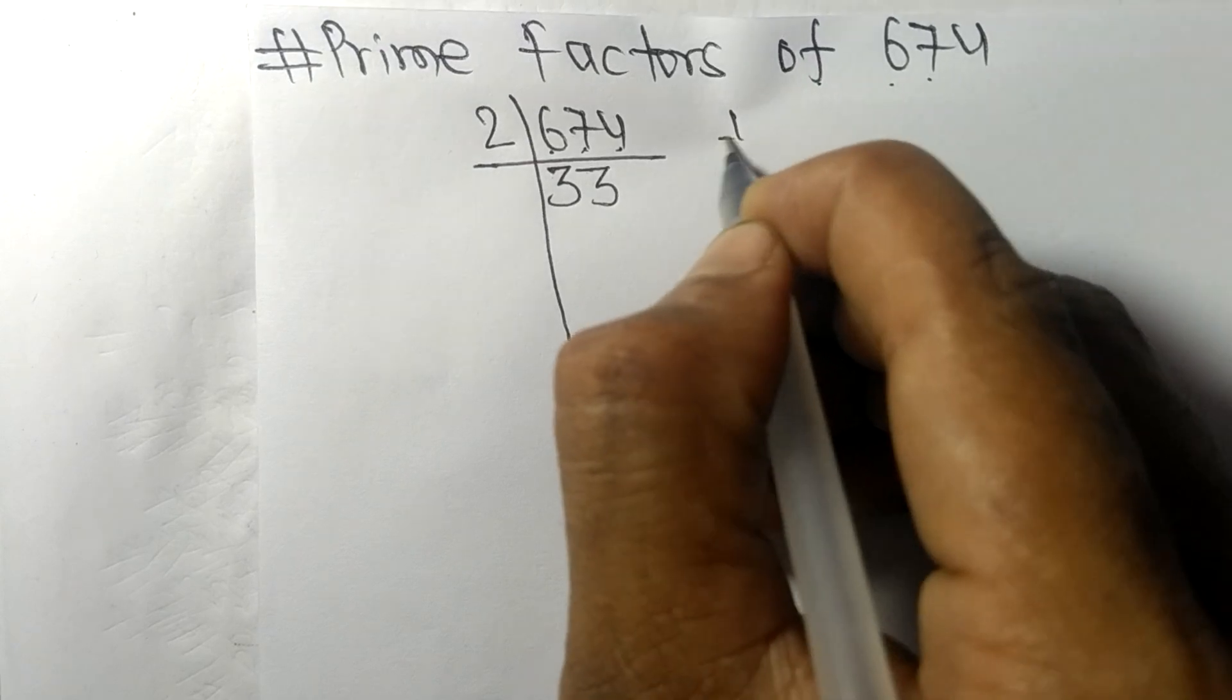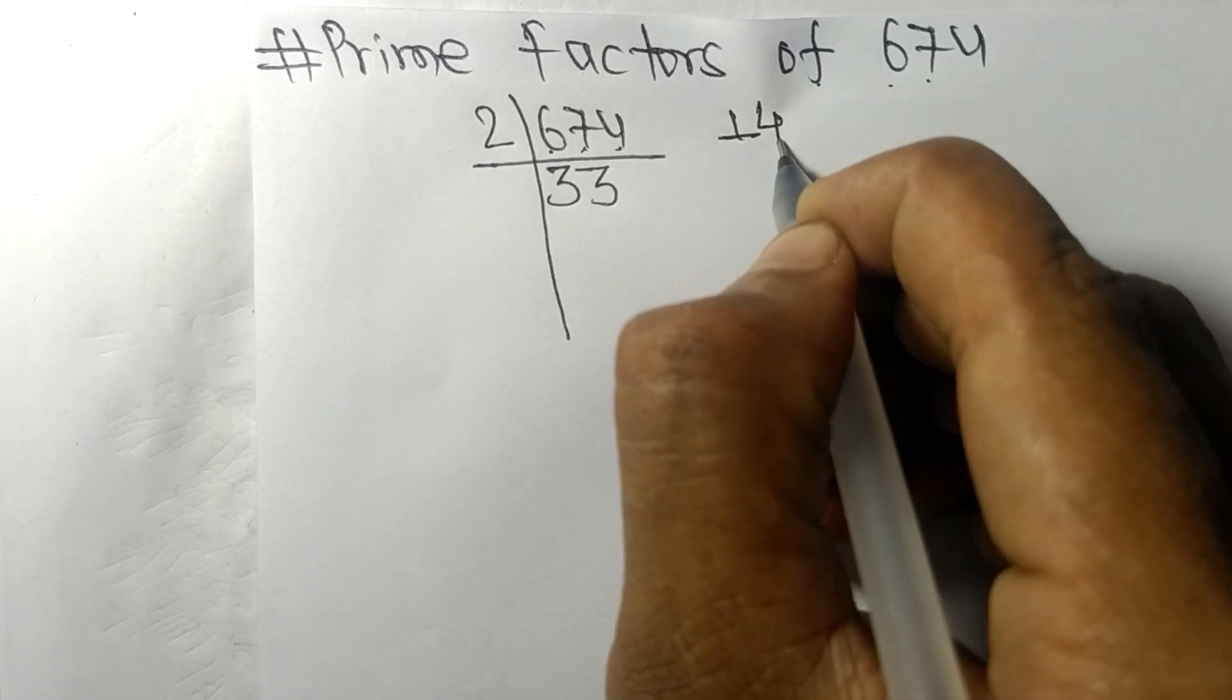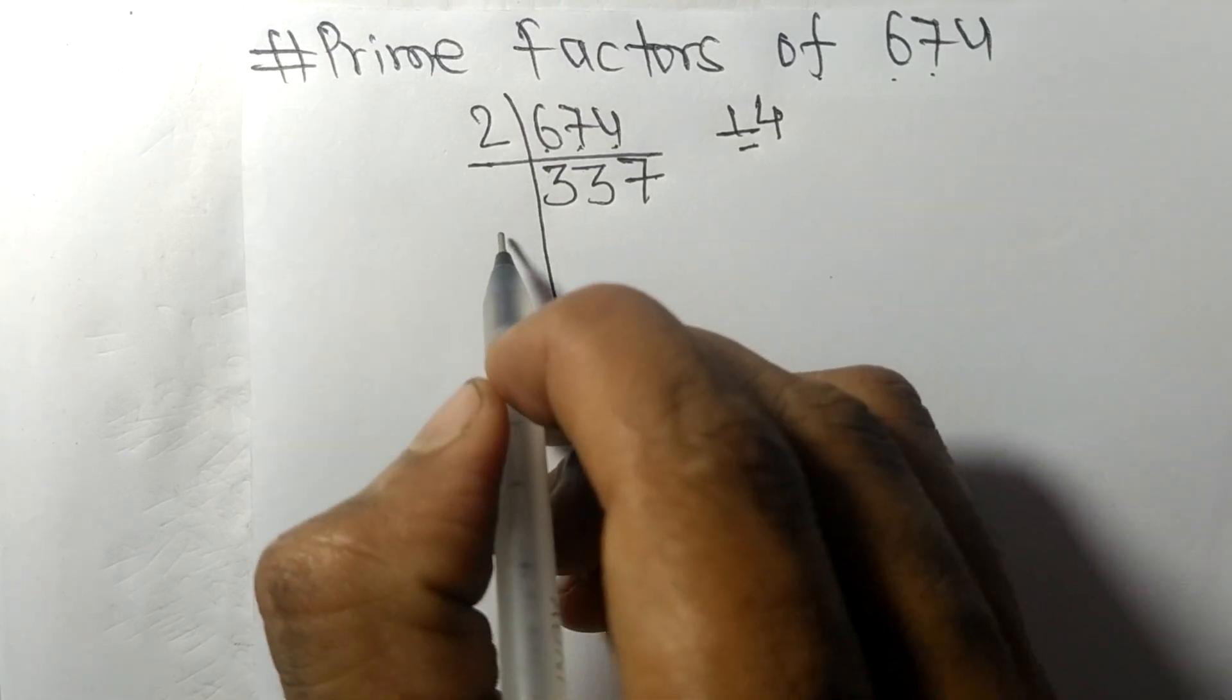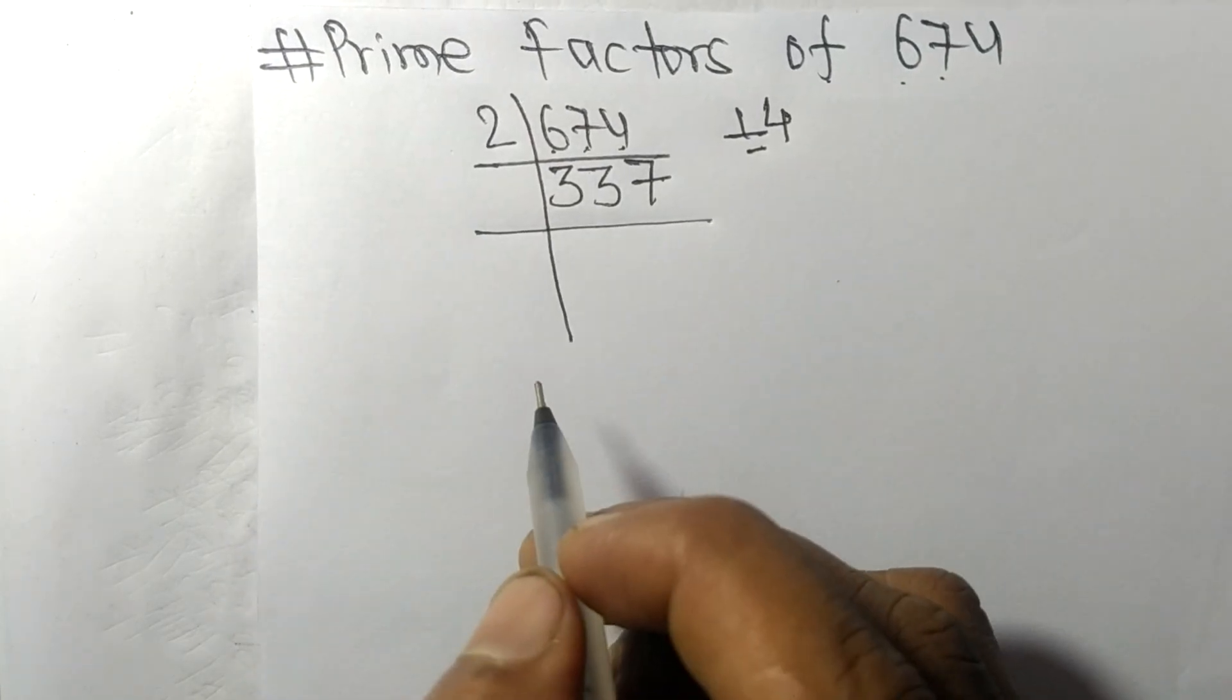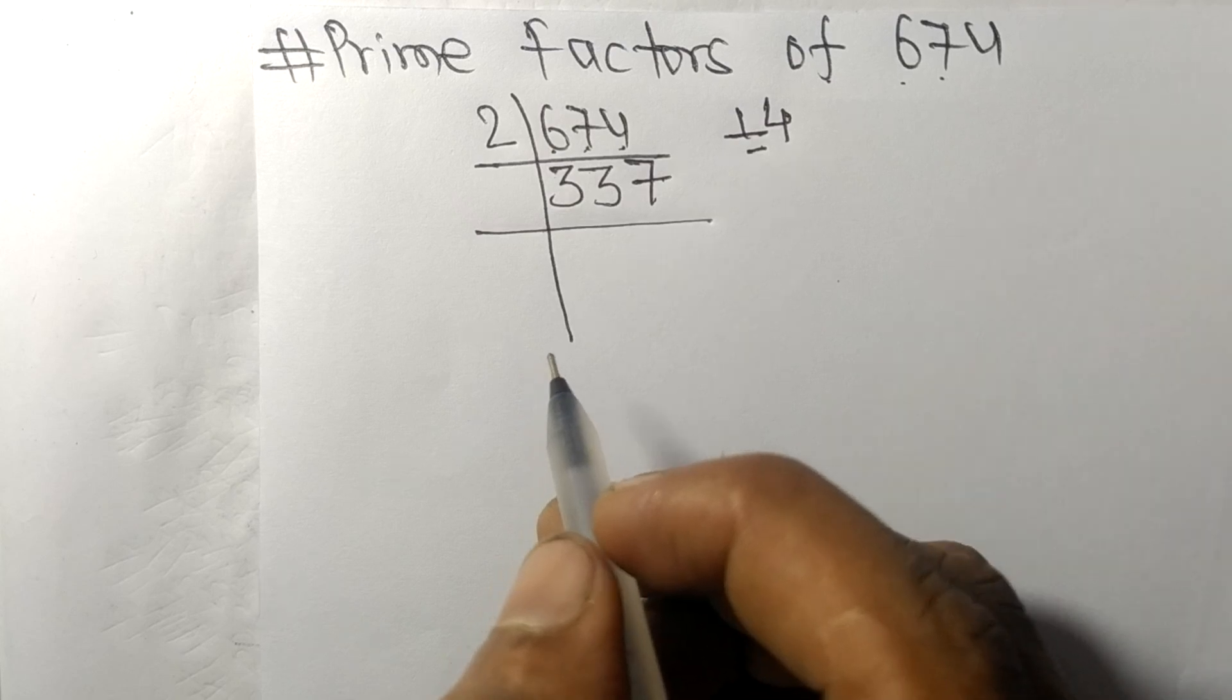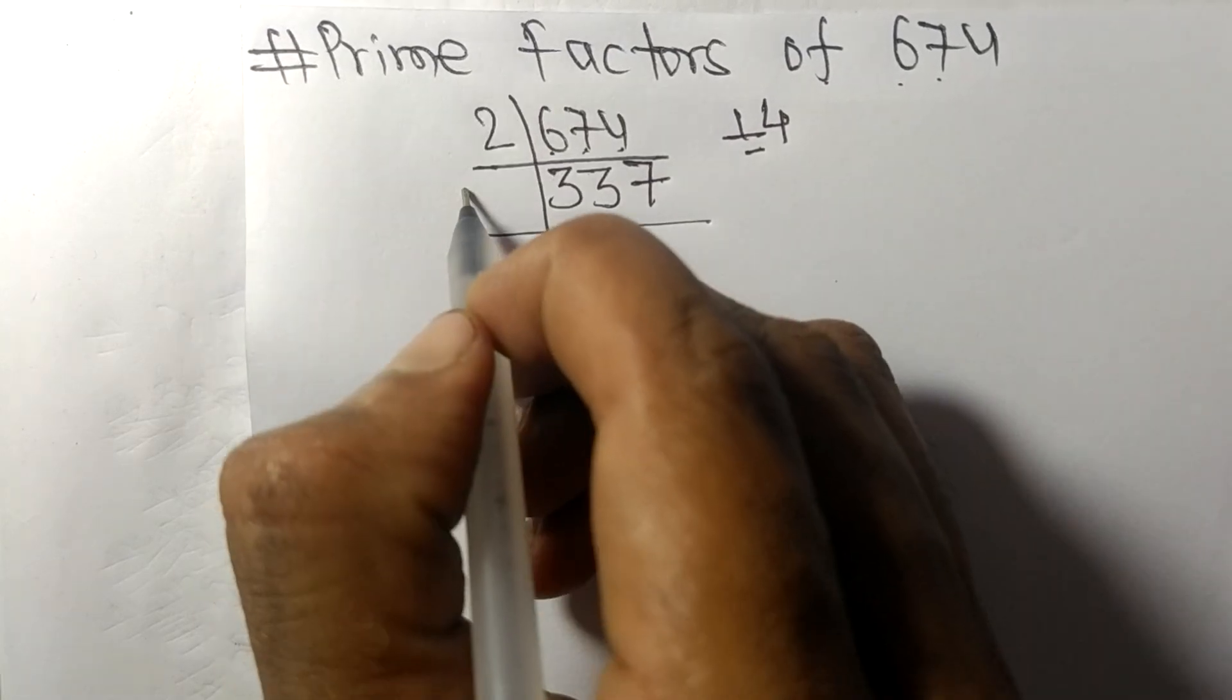Then this 4, 14. 2 times 7 equals 14. So now we got 337, which is a prime number, so it is divisible by 337.